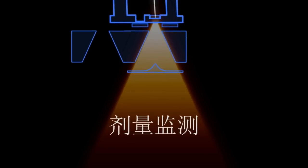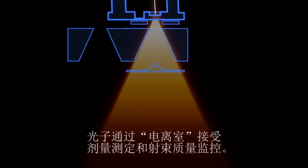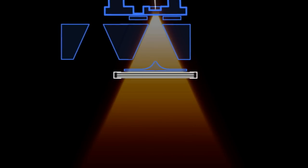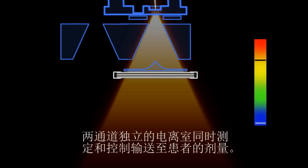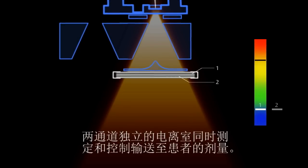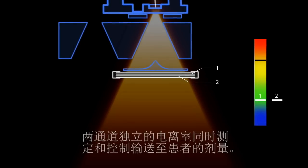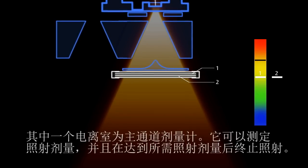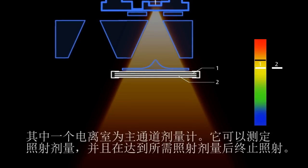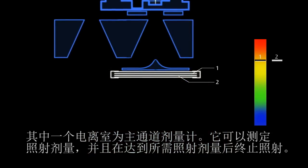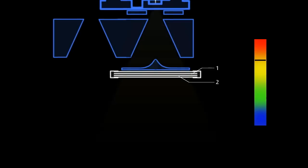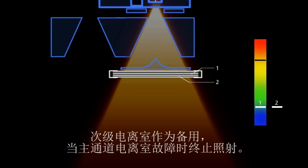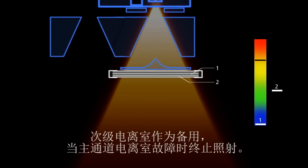Dose measurement. The photons now pass through the ion chamber for dose measuring and beam quality monitoring. The dose delivered to the patient is measured and controlled simultaneously in two independent ionization chambers. One chamber is the primary dosimeter — it measures the radiation and terminates the beam when the required dose has been delivered. The secondary ion chamber acts as a backup and will stop the irradiation if the primary chamber fails.